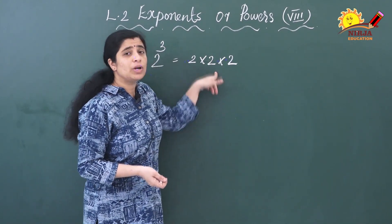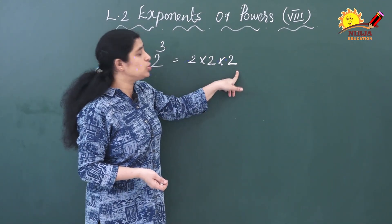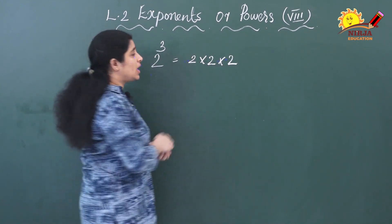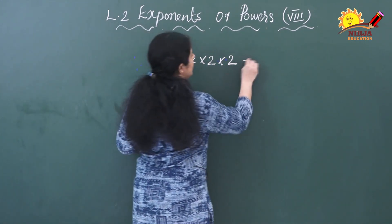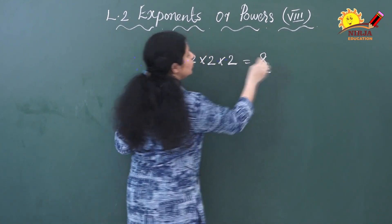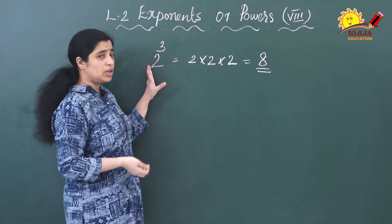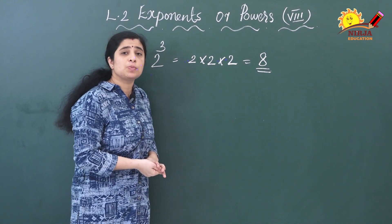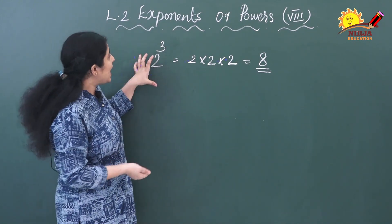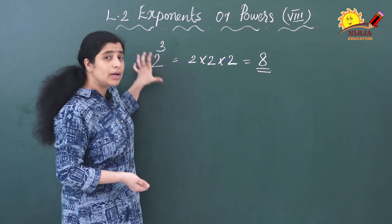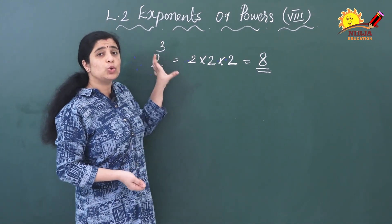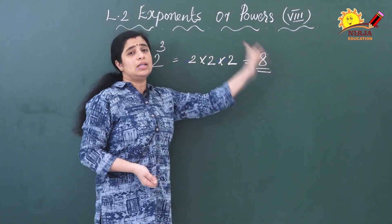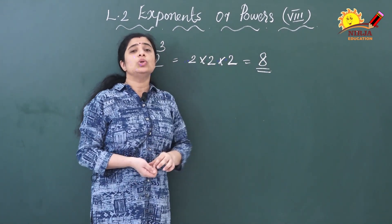2 multiplied by 2 multiplied by 2. Then what is the value? 2 twos are 4, 4 twos are 8. This is the value of 2 raised to 3. This notation is known as exponential notation and the meaning is that you are multiplying 2 three times, that is 2 into 2 into 2, equal to 8.